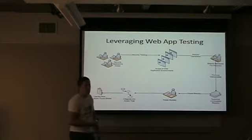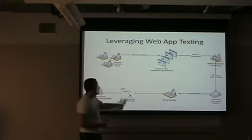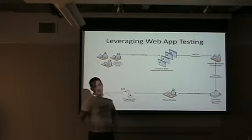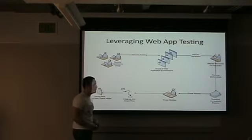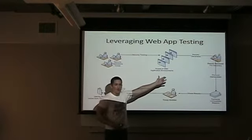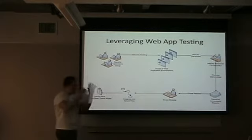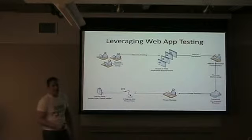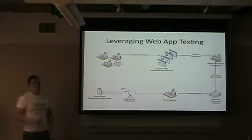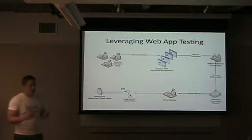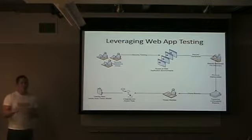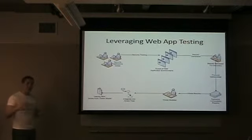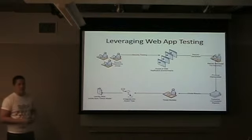There are people already testing the application and network. We don't want to get in their way — we want to leverage that work and integrate it into our attack tree. Threat modeling takes a step back: security is very adversarial to internal customers, but threat modeling has a way of being less adversarial and more collaborative.